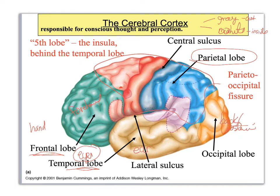Separating the parietal lobe into two sections is the central sulcus — a very distinctive landmark. Separating the parietal from the temporal lobe is the lateral sulcus. Right in here you have the parietal occipital fissure. A sulcus is a deep groove; a fissure is a really deep groove. That was four lobes. There is a fifth lobe — you basically have to stick your finger in here and lift up and down to see it, but it is a lobe.